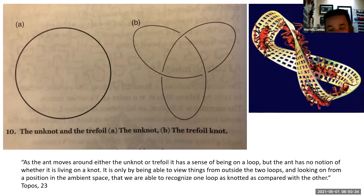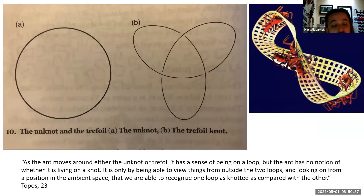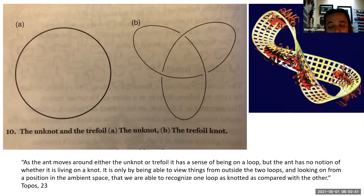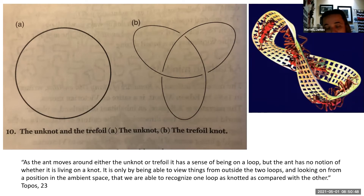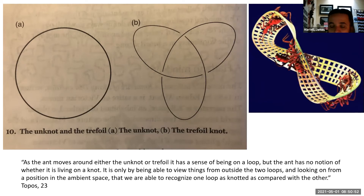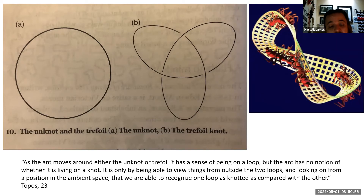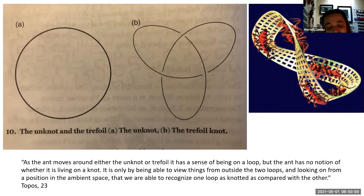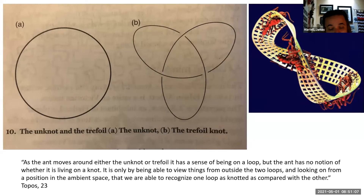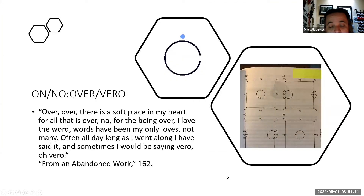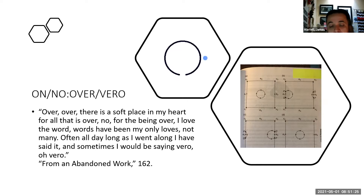Crawling by the millions on screens that are stages but also the whole earth, we believe there are two surfaces — an inside and an outside. But we do not yet know if we walk in a simple circle, repeating it all, or if this is a knot that has already created certain sub- or objectivity. While time seems cyclical — the end is in the beginning — it is rather the same spatiality of our surface that keeps our Beckettian continuity, always on, as well as, since this is a non-orientable surface, no. Or: 'Over and vero. Over, over, there is a soft place in my heart for all that is over. No — for the being over. I love the world. Words have been my only loves, not many. Often all day long as I went along, I have said it, and sometimes I will be saying vero, o vero.'